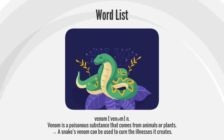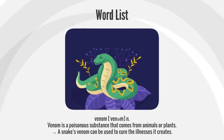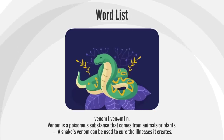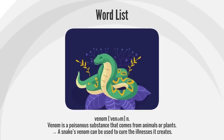Venom. Venom is a poisonous substance that comes from animals or plants. A snake's venom can be used to cure the illnesses it creates.